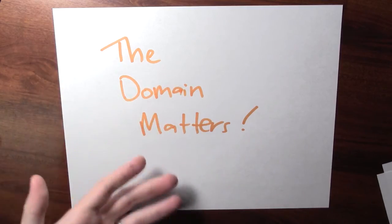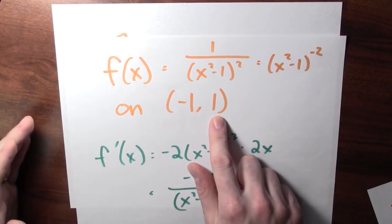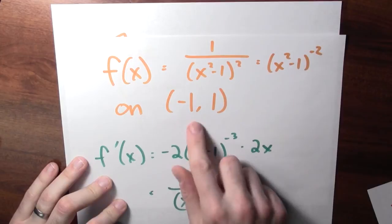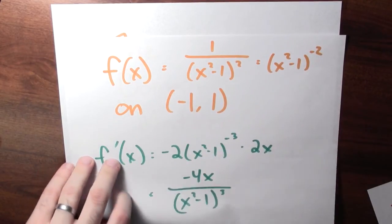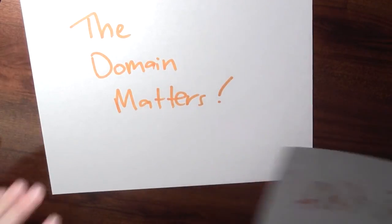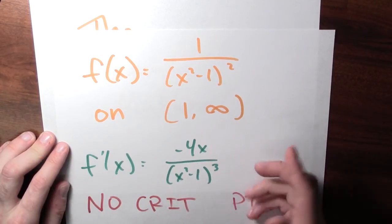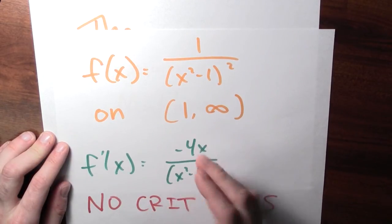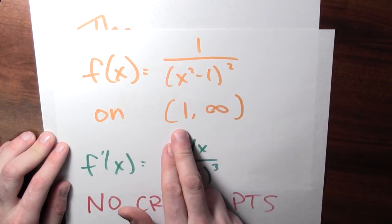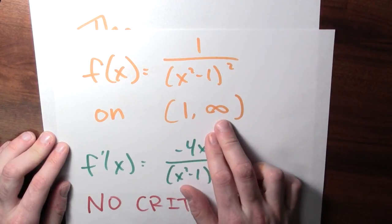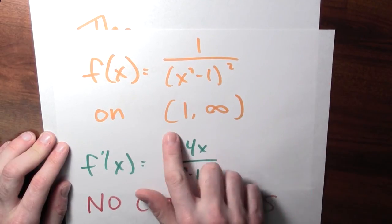In other words, the domain matters. On the interval from minus 1 to 1, the function has a smallest output value — it achieves its minimum at x equals 0. But on the domain from 1 to infinity, there are no critical points, and by studying the limiting behavior as x approaches 1 and as x approaches infinity, we find the output can be made arbitrarily large or arbitrarily close to 0. So this function achieves neither a maximum nor a minimum value on that interval.